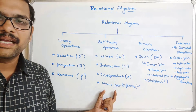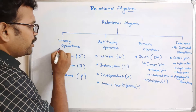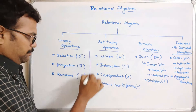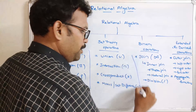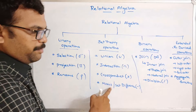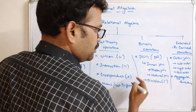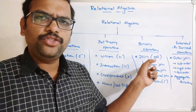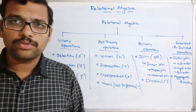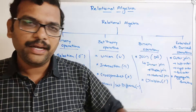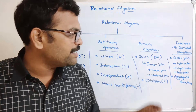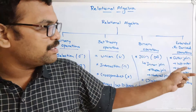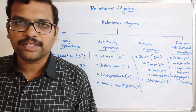To summarize, in relational algebra the input is a relation — a table — and the output is also a relation. The operations are grouped as: unary operations (selection, projection, rename); set theory operations (union, intersection, cross product, and minus); binary operations (join and division); and extended or derived operations (outer join — with left, right, and full outer join — and aggregate functions). In join, there are two categories: inner join and outer join. Inner join can be implemented as theta join or natural join.